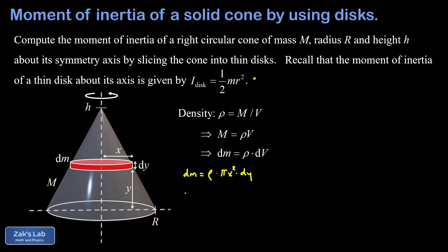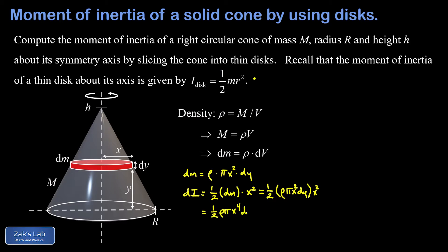Now we take that dm and substitute it into the formula for the moment of inertia of a disk. The moment of inertia contribution is one half times the mass — which is dm — times the radius squared, where the radius is x. Substituting dm gives dI equals one half times rho·pi·x²·dy times x², which puts together as one half·rho·pi·x⁴·dy. This is problematic because it contains two variables, x and y, so we can't integrate it yet.